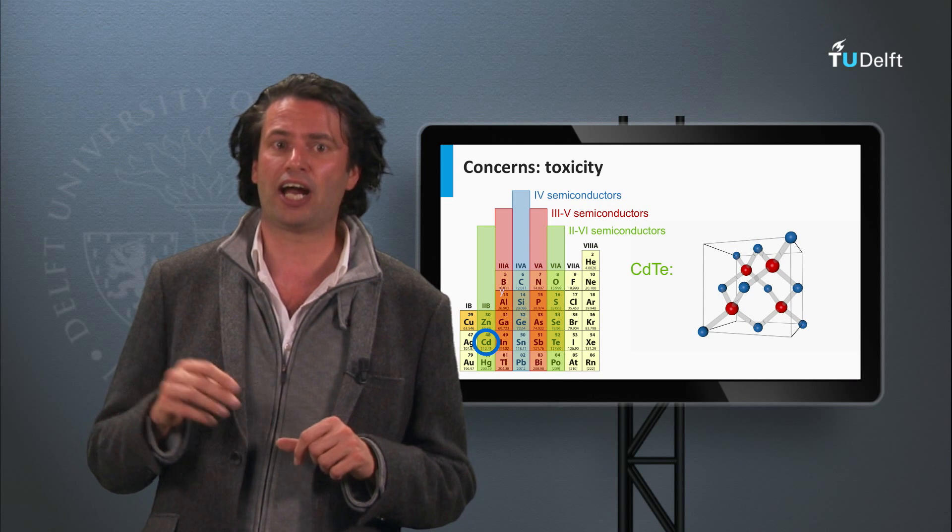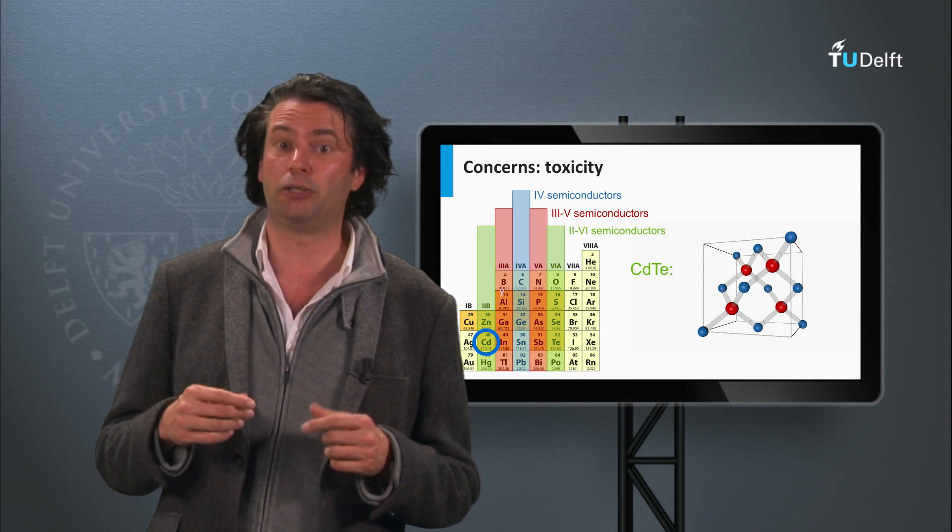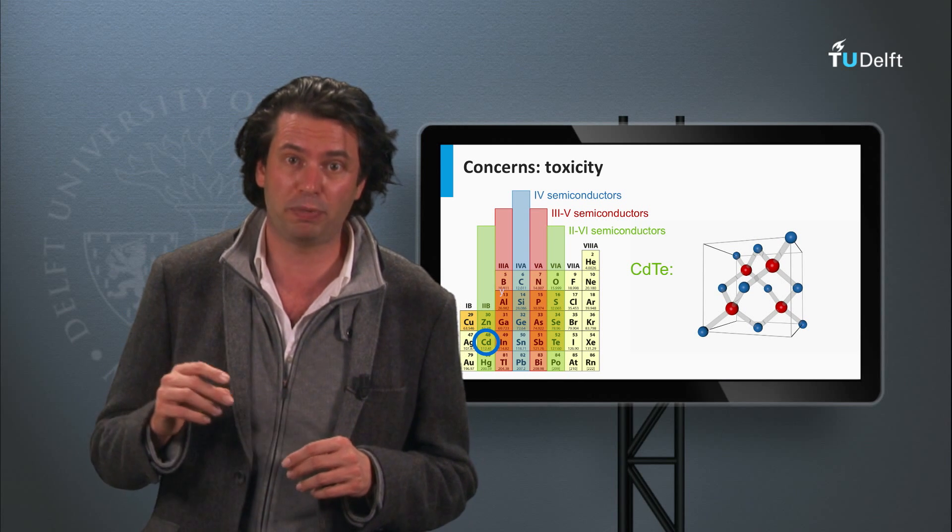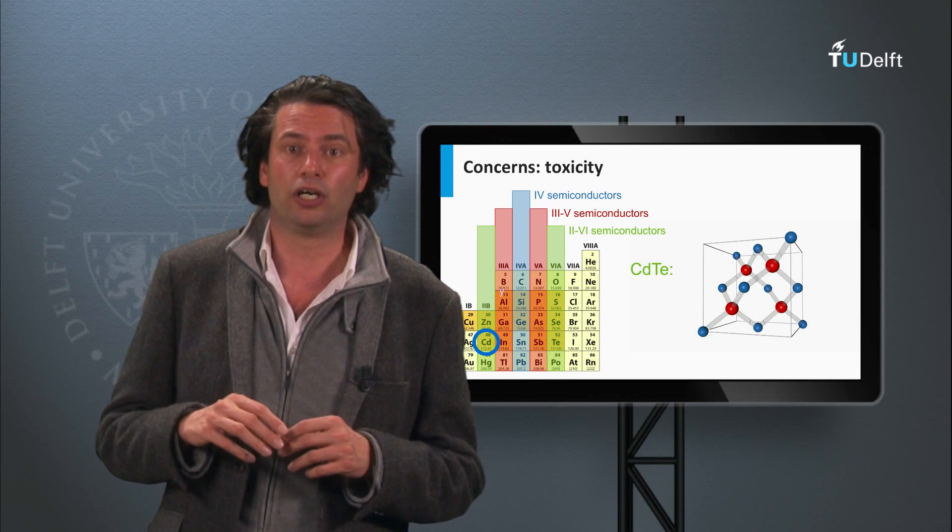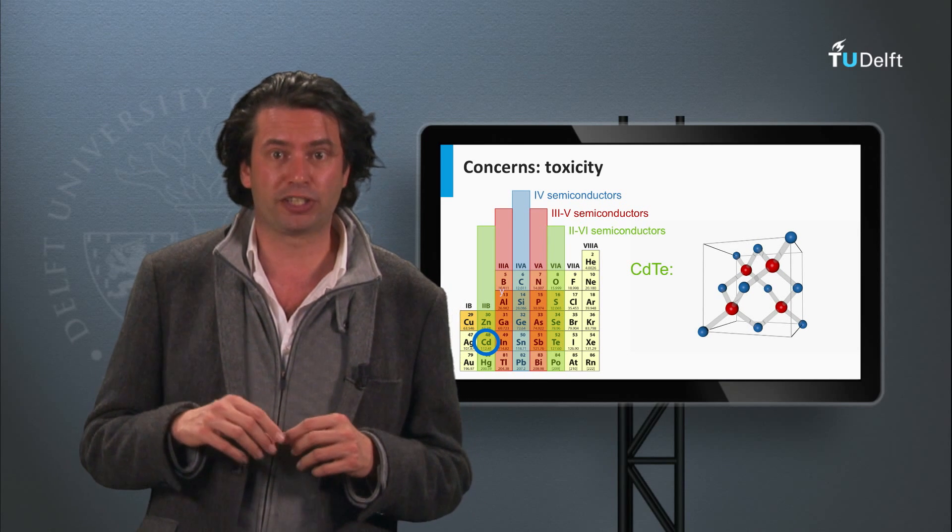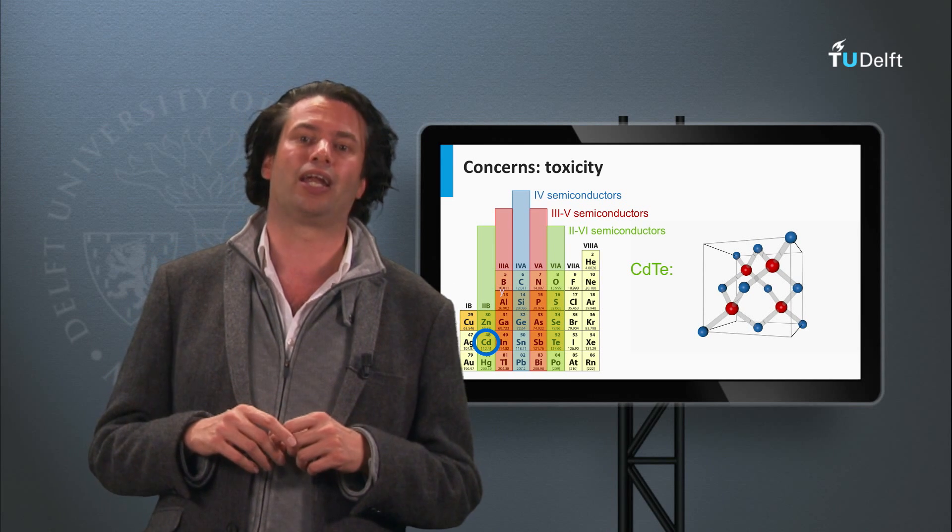For instance, First Solar has a recycling scheme in which a deposit of 5 dollar cents per watt peak is included, which covers the cost for the recycling at the end of the module's lifetime.